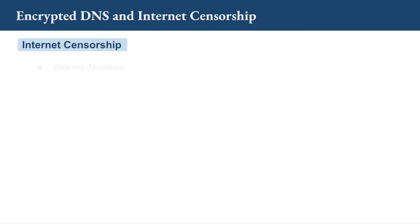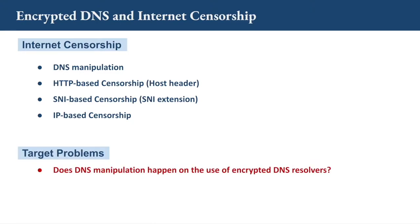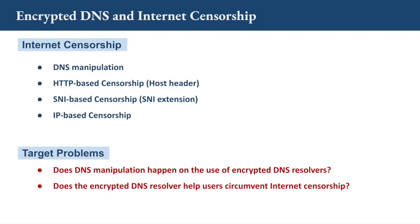Censors have many ways to conduct censorship, and DNS manipulation is one of the most popular approaches. Other than that, censors can also examine the host header in HTTP requests, check the SNI extension during the TLS handshake, and block a list of IP addresses. In this work, we are going to answer two questions: first, does DNS manipulation happen when using an encrypted DNS resolver? And second, does an encrypted DNS resolver help users circumvent internet censorship?